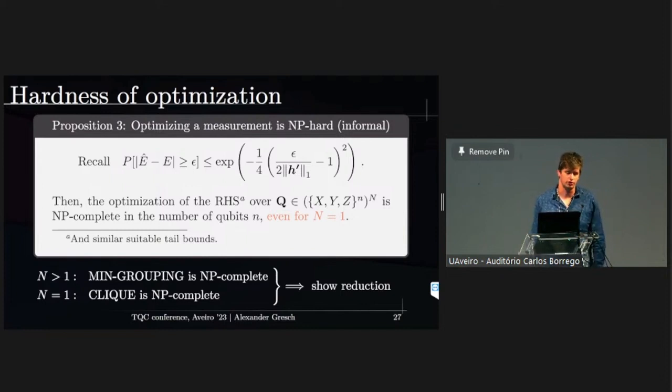So actually, we also show here that we actually find a reduction from grouping to our problem, proving the completeness here. And for the case for N equals 1, we're only finding a single measurement setting. We go one step back to the underlying graph problem. This is the clique problem, trying to find the largest clique within a graph that's also NP-complete, and finish the proof on this side.